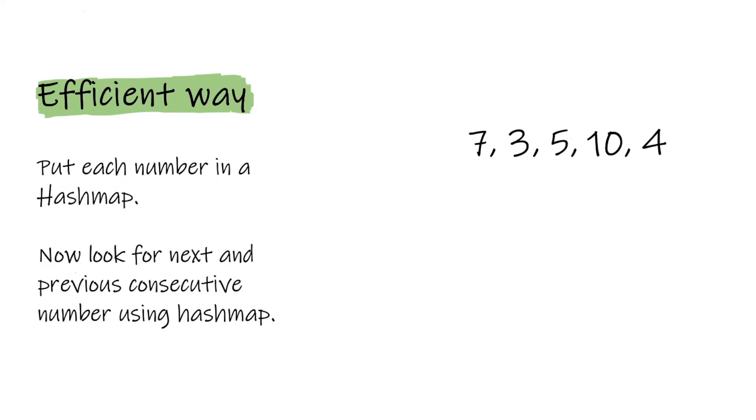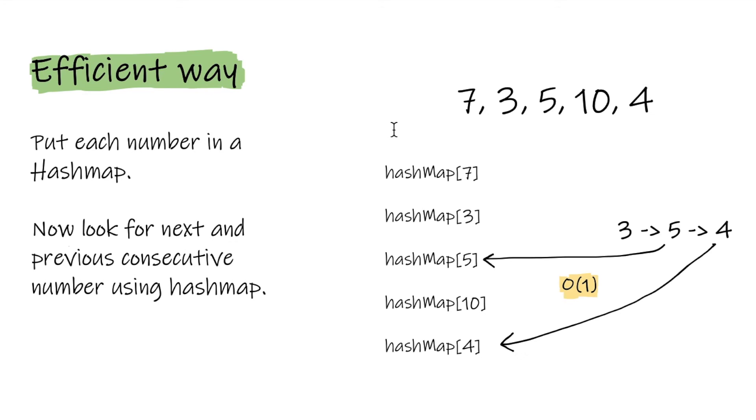Yes, we can reduce the lookup time for next and previous consecutive numbers by using a hashmap data structure. We start by putting each number in a hashmap. Then we pick each number from the array and find its next and previous consecutive numbers using the hashmap. The time complexity to find the next and previous elements becomes constant, so we can find the longest consecutive subsequence efficiently.